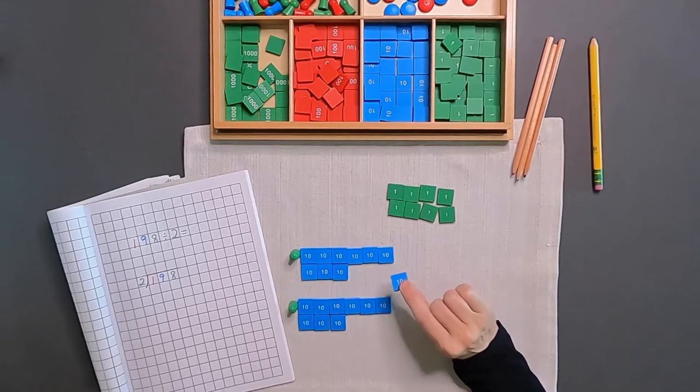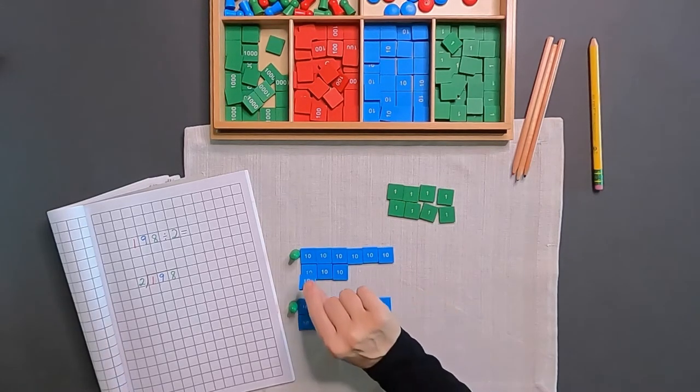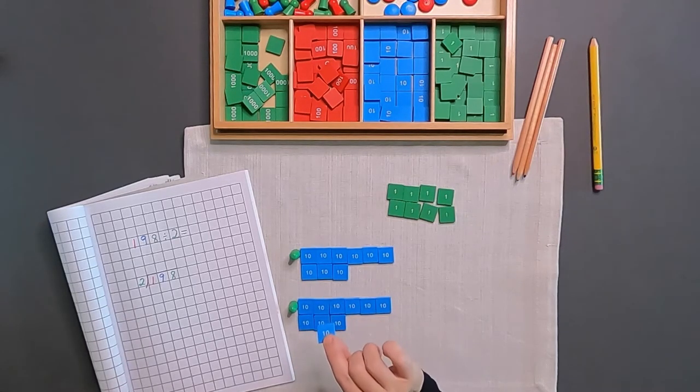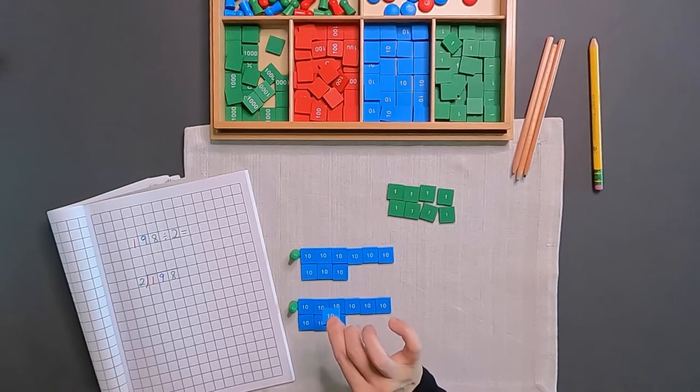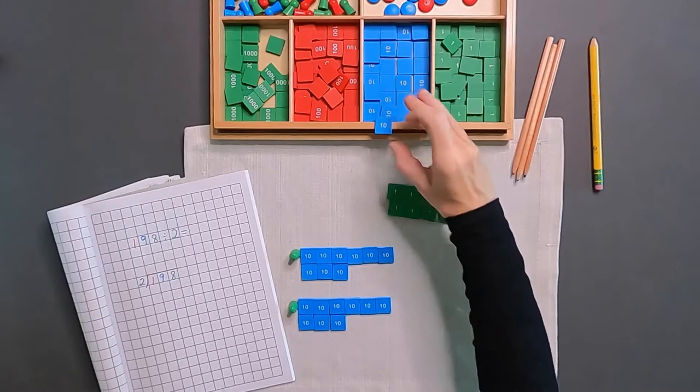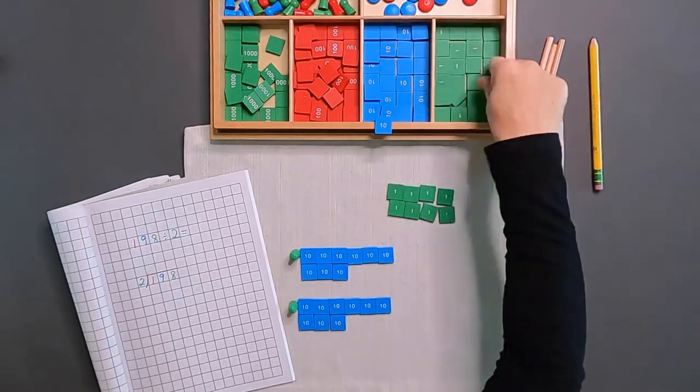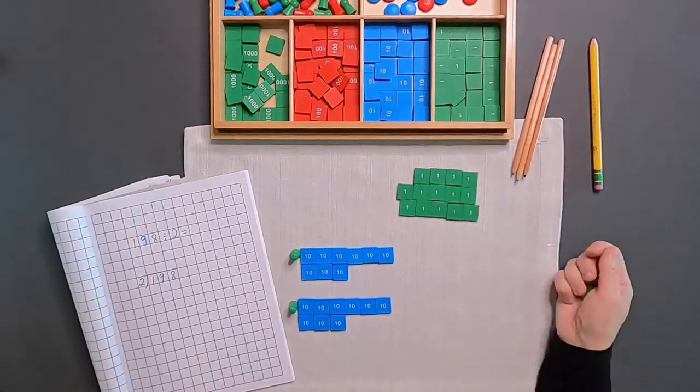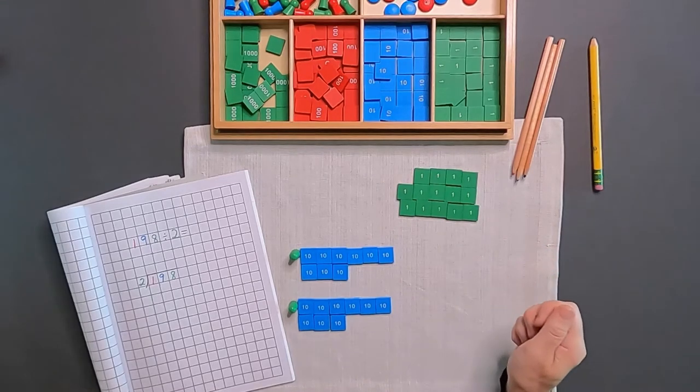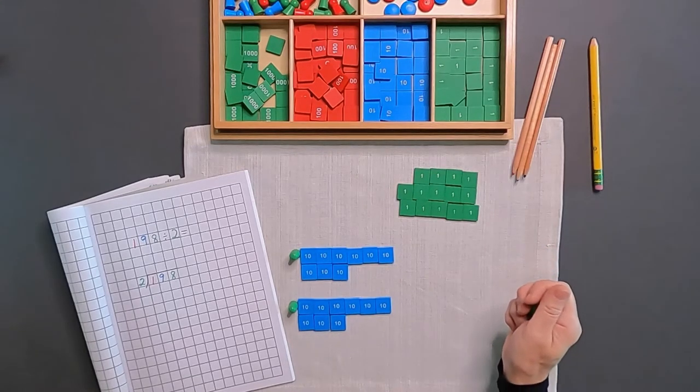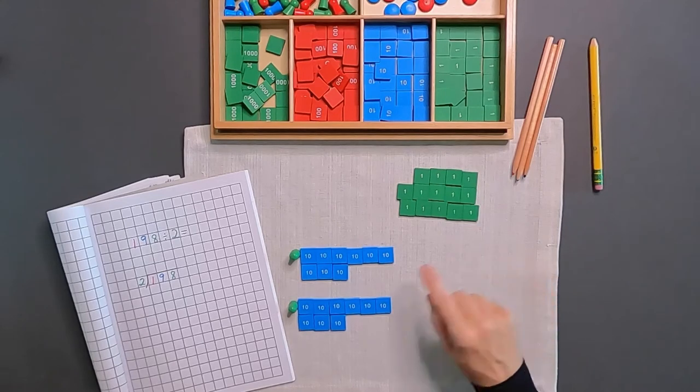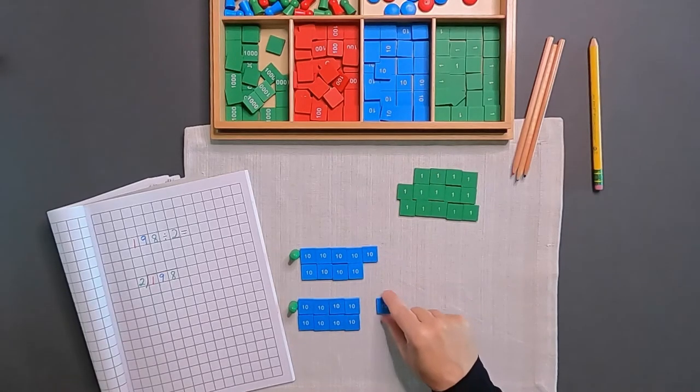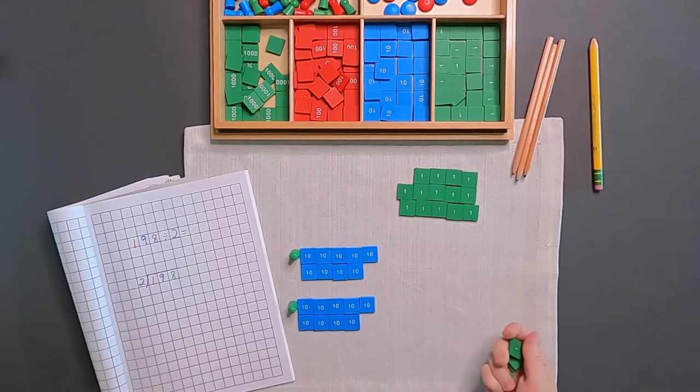We have shared out all of our tens and I have one left over that I can't share equally. So I'm going to exchange this 10 stamp for 10 unit stamps. We have exchanged that 10 stamp for 10 units and we're going to continue sharing out again. I'm just going to move my tens here, make that a little bit more even and give me a little bit more space on the mat.